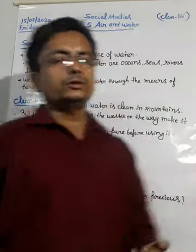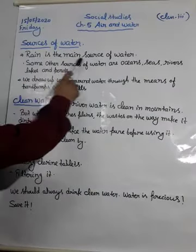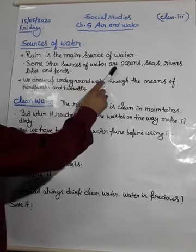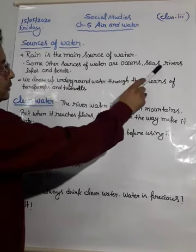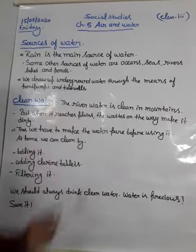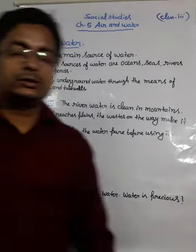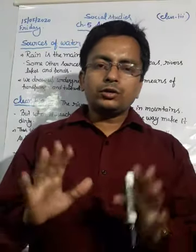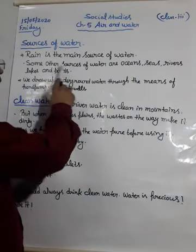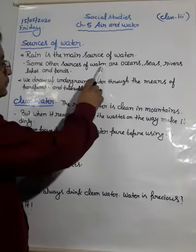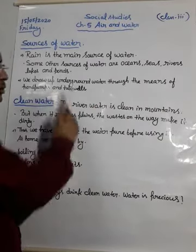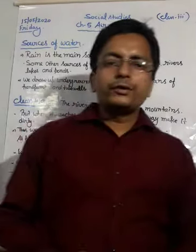So we can say rain is the main source of water. Some other sources of water are oceans, seas, rivers, lakes, and ponds. These are also the main sources of water.